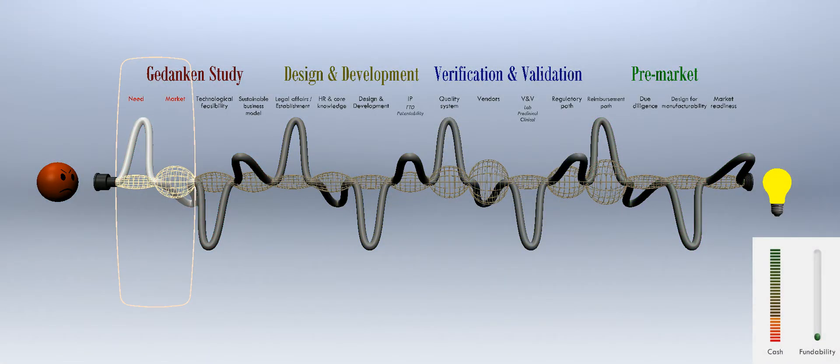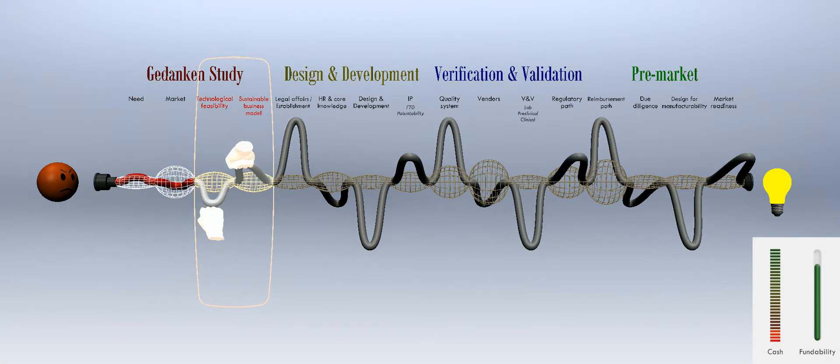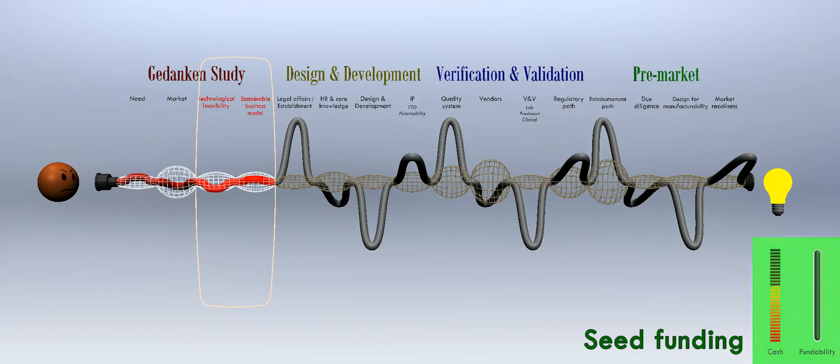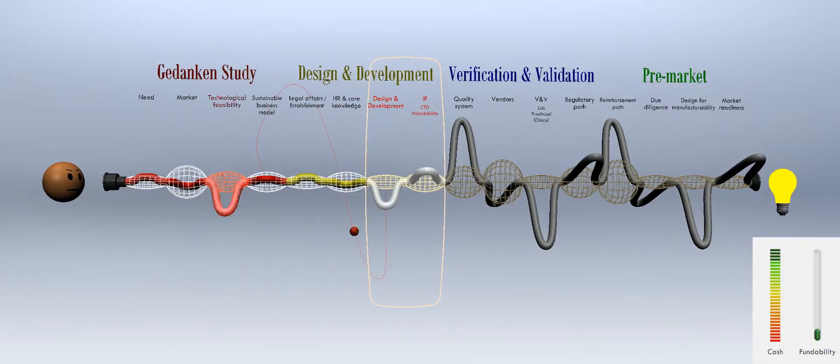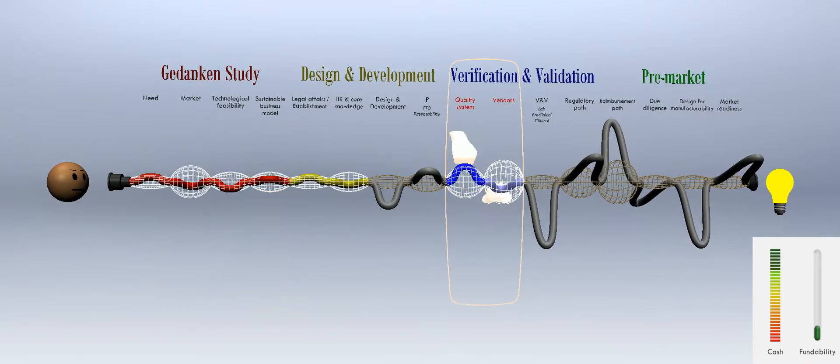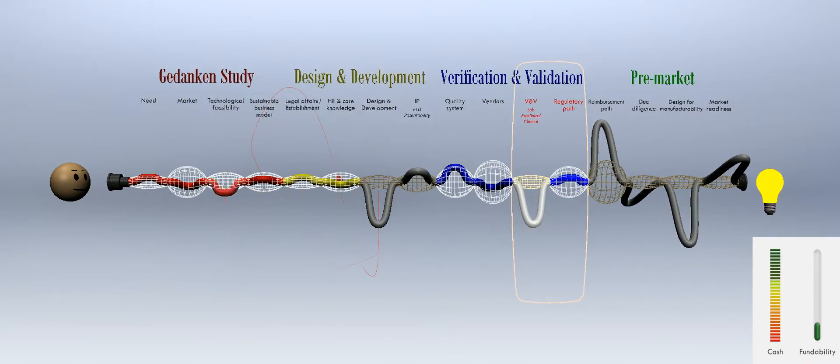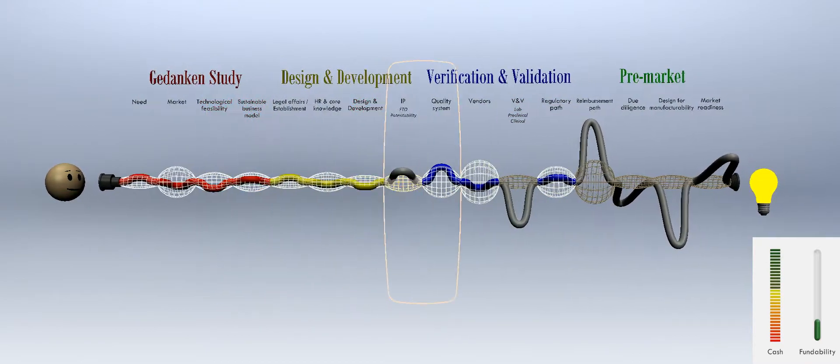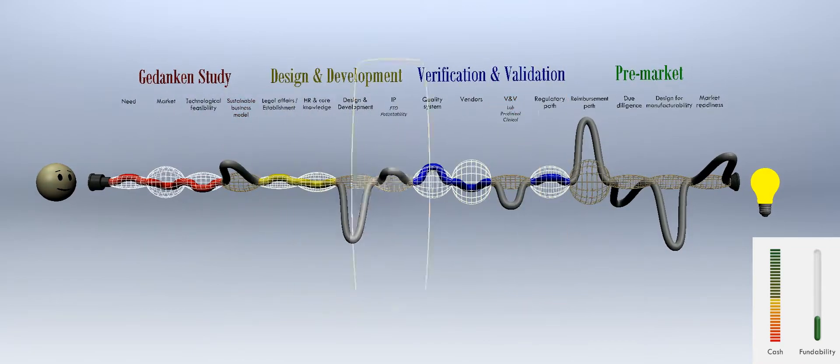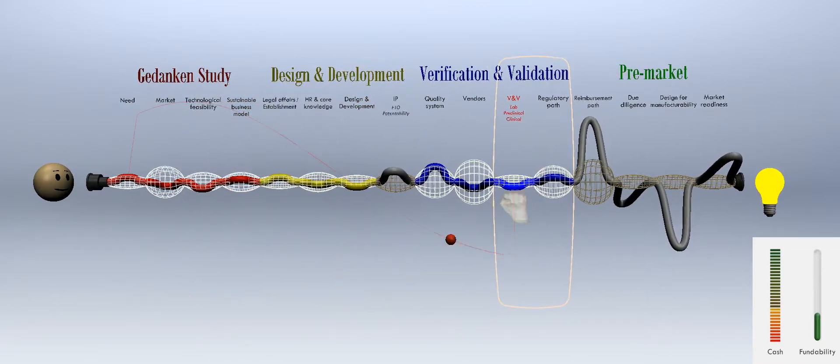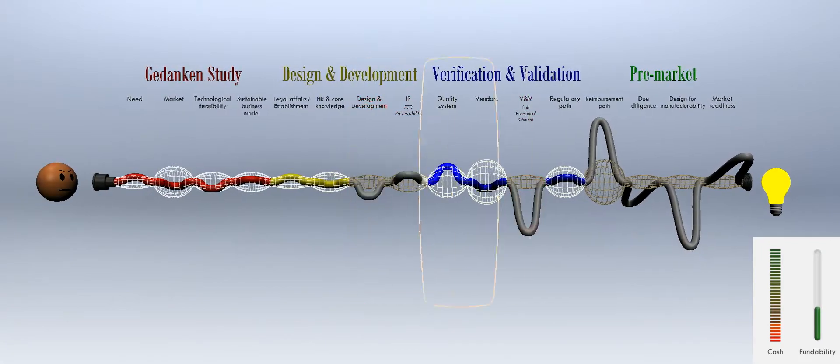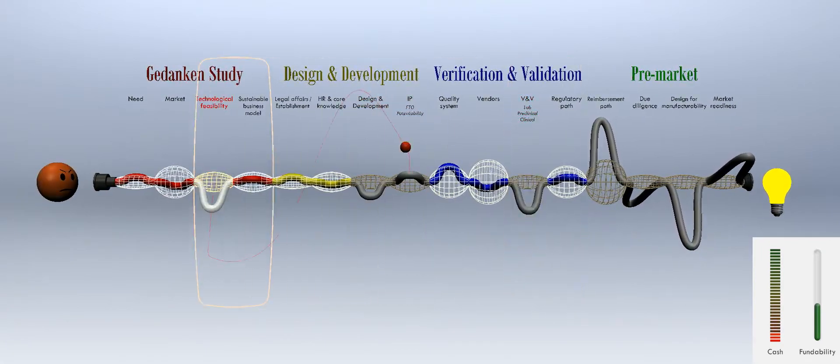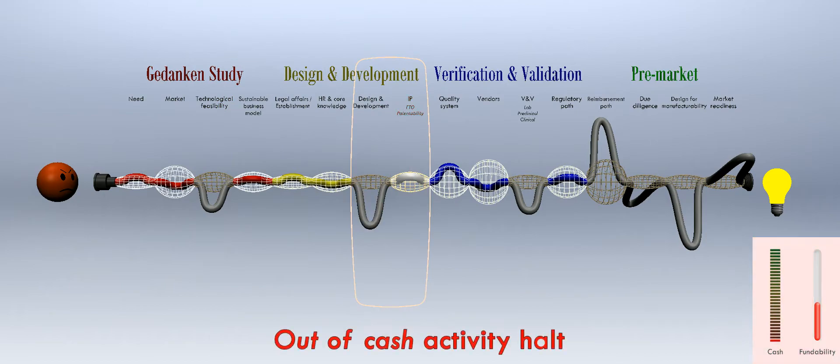Often, the first funding round after the seed funding is the most challenging one. This funding round is commonly referred to as the valley of death. The seed money is normally limited, while the risk components of this early stage are at their highest level. Data show that most early stage medical device startup companies will run out of cash and halt any activity before sufficiently mitigating the key risk components, thus becoming practically unfundable.